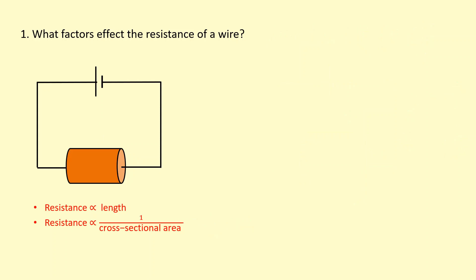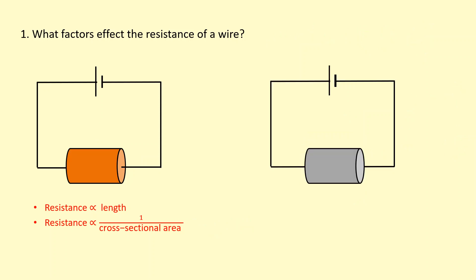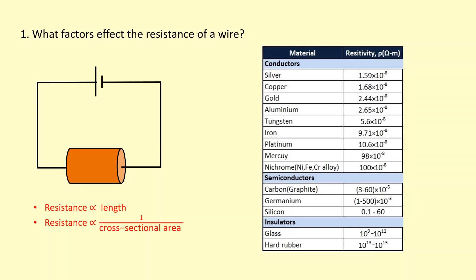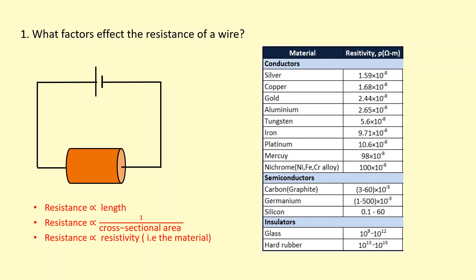The final factor affecting resistance is the material the wire is made out of. To quantify how resistive a material is, we use a quantity called resistivity. Conductors have very low resistivity, semiconductors are in between, and insulators have very high resistivity. Resistance is directly proportional to resistivity — that's where the material factor comes in.